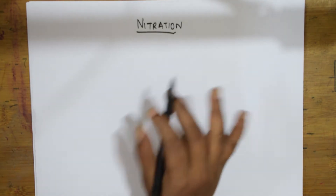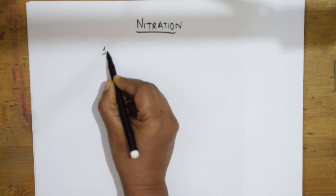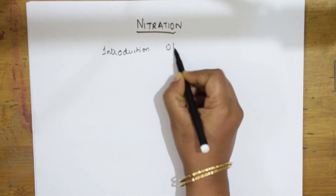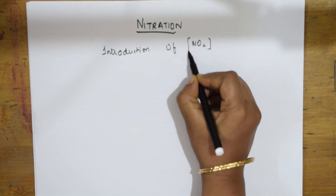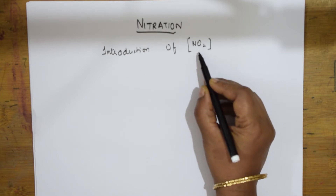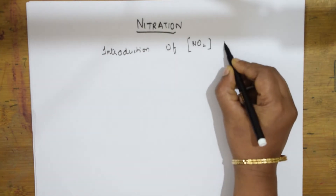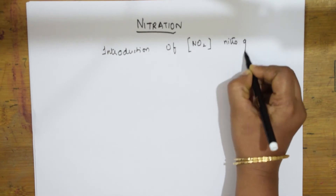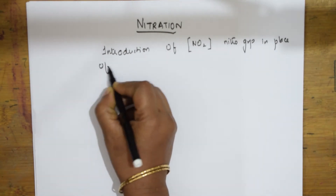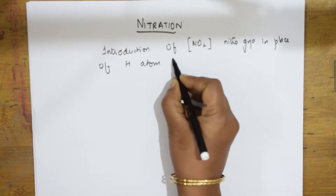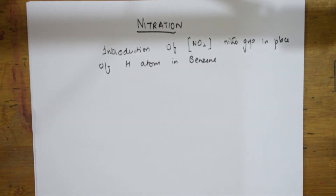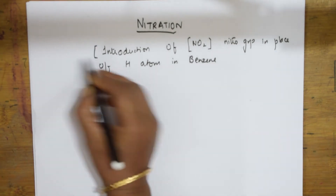What actually is nitration? Nitration is simple - it is the introduction of the NO₂ group. This NO₂ group is the electrophile here. It will be introducing the nitro group in place of a hydrogen atom in benzene. So, introduction of the nitro group in the place of hydrogen in benzene is called nitration. This is the definition.